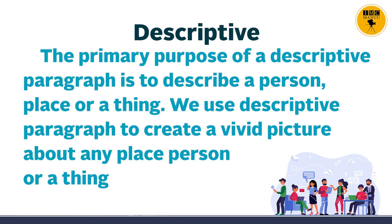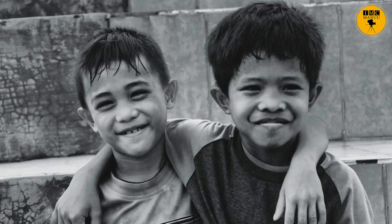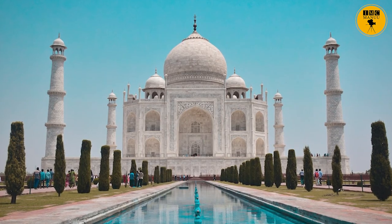The primary purpose of a descriptive paragraph is to describe a person, a place, or a thing. It is intended to create a vivid picture about any place or thing. For example, when you describe your best friend or provide a description of the Taj Mahal, such paragraphs can be called descriptive paragraphs.